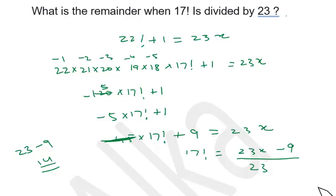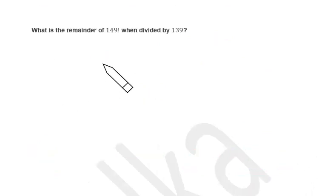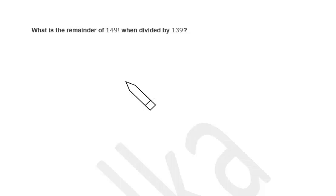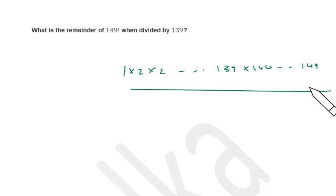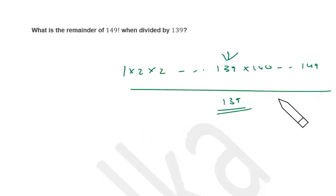The remainder is 14. Now let's take the next question: what is the remainder of 149 factorial when divided by 139? That's a simple question — 139 is a prime number. If you expand 149 factorial, you get 1 into 2 into 3 all the way up to 139, then 140 into 141 up to 149. Since 139 is already a factor inside 149 factorial, this number is a multiple of 139, so the remainder is 0.